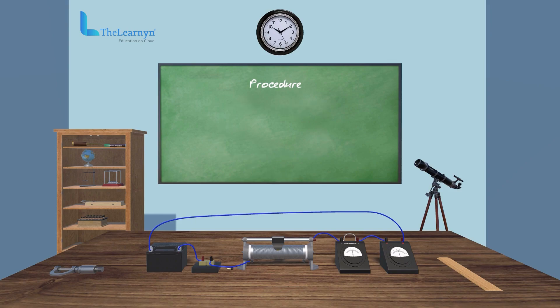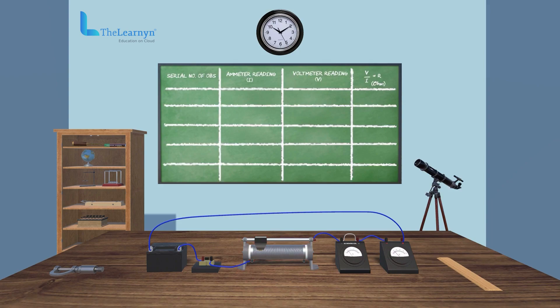Now, insert the key and slide rheostat contact to check the working ammeter and voltmeter. Adjust the sliding contact of rheostat and we can note down the value of potential difference V from voltmeter and current I from ammeter.